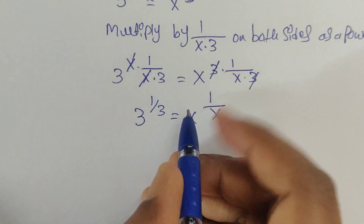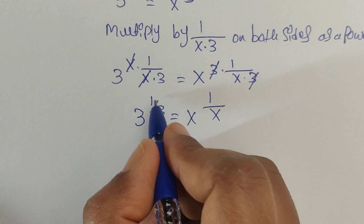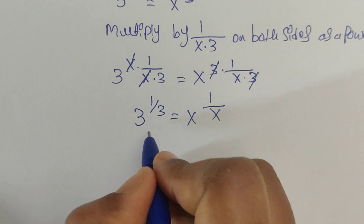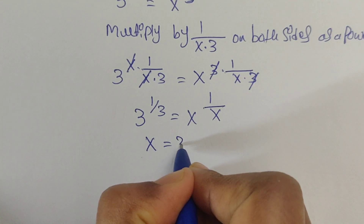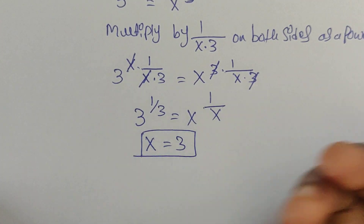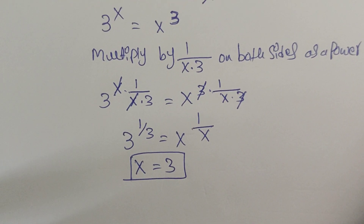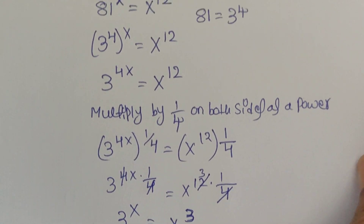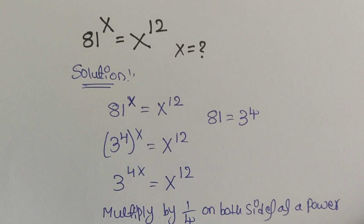Now we compare these two terms: x equals 3, and 1/3 equals 1/x, so the value of x is 3. This is the answer. Thank you for watching, please do subscribe for more videos. Thank you, take care, bye.